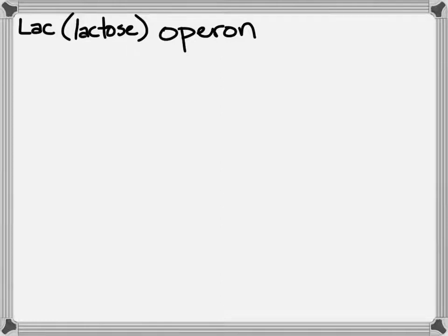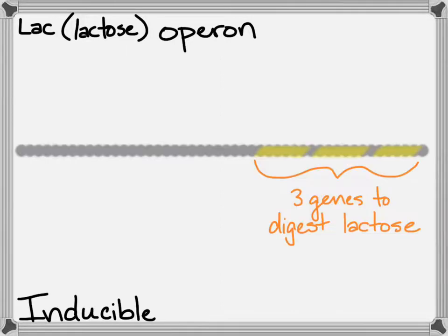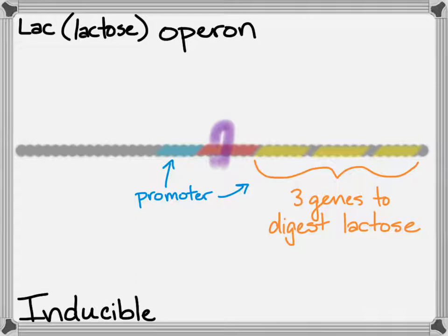The lac operon is the classic example of an inducible operon. It has three genes used to digest lactose, an operator with a repressor protein that's bound, and a promoter that would promote the expression of these three genes — so the RNA polymerase would bind there. Interestingly, with the lac operon you've also got a promoter and the gene for making the repressor right in the same area on the circular chromosome of the bacteria, acting as a regulatory gene.